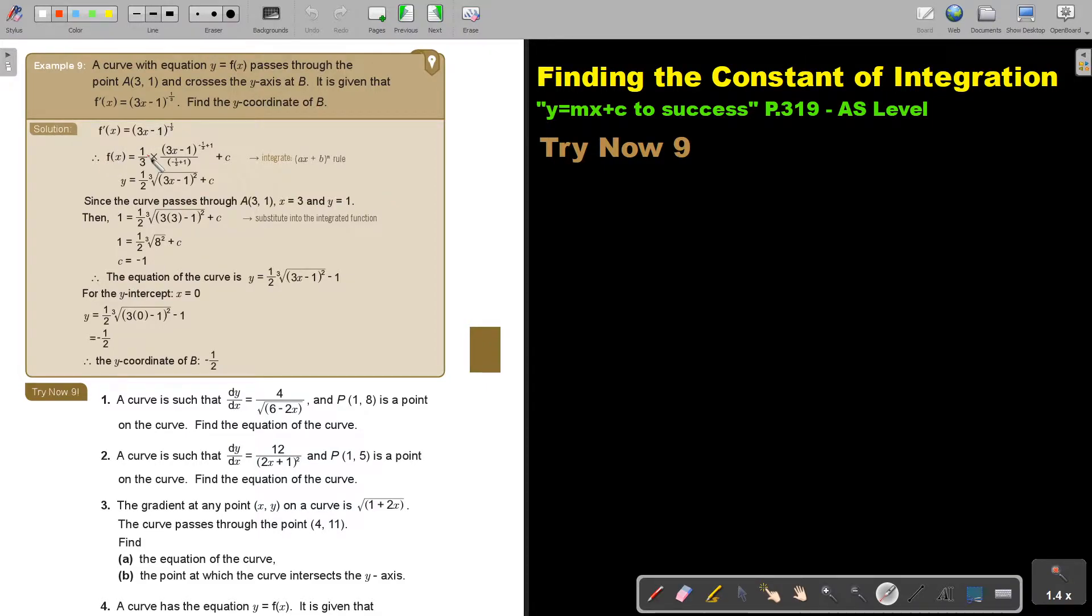So you just have to concentrate more on your integration process. Can you remember? We take the value in front of X, so it's 1 over 3. Then we add 1 and we divide plus C. And then we just simplify this a little bit. And then since the curve passes through this, we substitute.